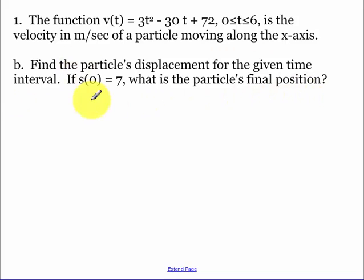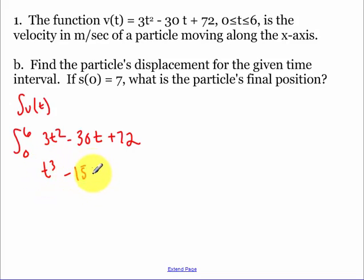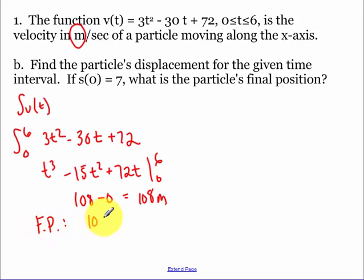So find the particle's displacement for the given time interval. So displacement, remember, is just my integral of velocity. And then I'm going to have to find the final position. So let's integrate velocity over our time interval. So when I integrate, and I'm doing this without a calculator, but I'm stealing a look at my notes so I don't make a mistake. So then I plug in 6 and I plug in 0, and we get 108 minus 0. So my displacement is 108 meters. And then my final position is I take my 108 meters and I add to it 7 to get 115 meters.